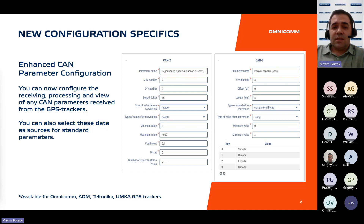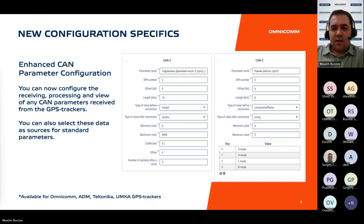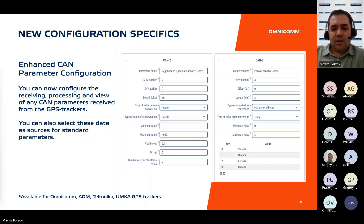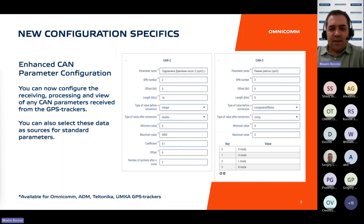A significant portion of the R&D efforts has been dedicated to refining custom settings, resulting in one of the update's most important innovations: expanded capabilities for handling data acquired via the CAN bus. The platform previously offered functionality for working with main and additional CAN parameters through specialized equipment models; however, this functionality presented a complex organizational structure.